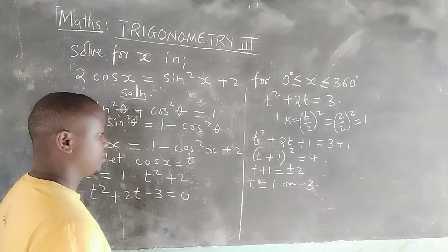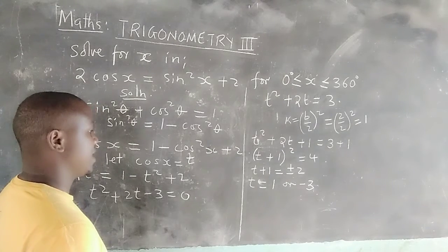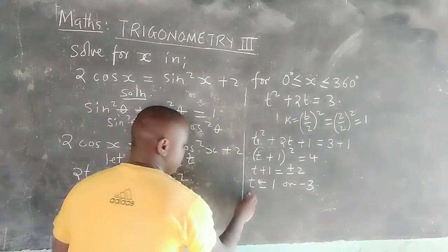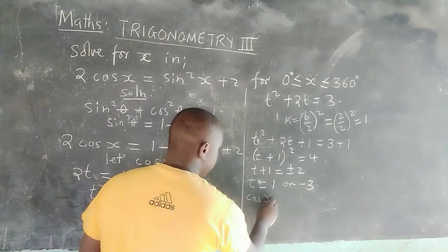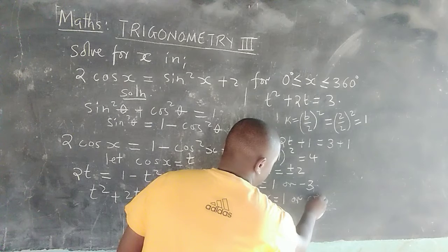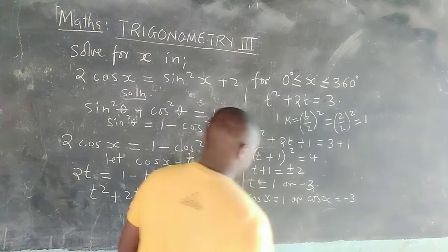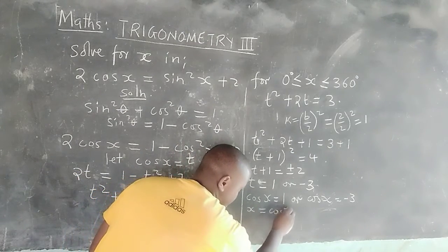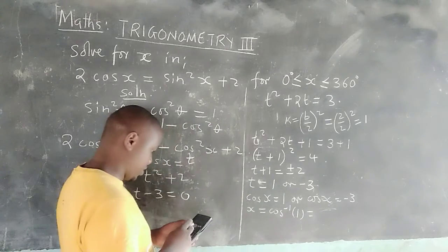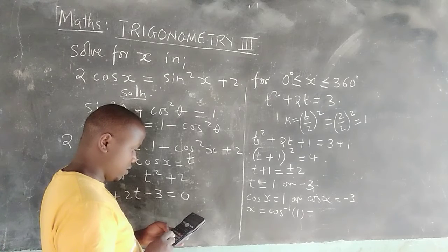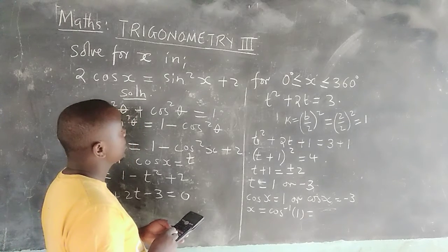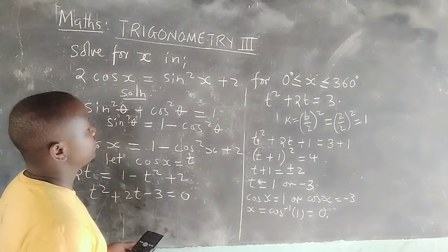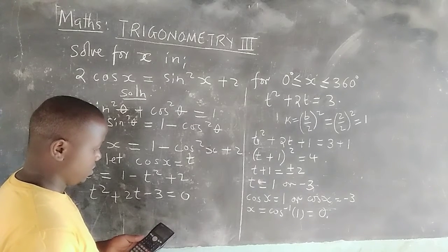Remember that t = cos(x). Therefore, cos(x) = 1, or cos(x) = −3. If cos(x) = 1, then x = cos⁻¹(1) = 0 degrees. Note that cos(x) = −3 is invalid since cosine values must lie between −1 and 1.